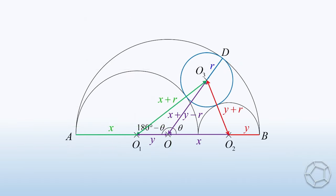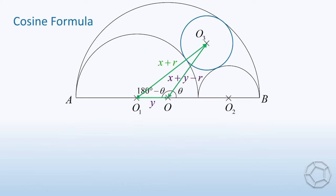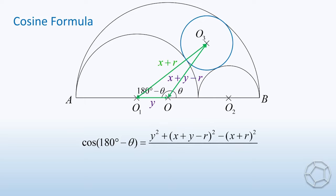Go back to the original figure. Likewise, we look at the green triangle. Using cosine formula again, we have cos(180° - θ) is equal to Y² plus (X + Y - R)² minus (X + R)² all divided by 2Y(X + Y - R).